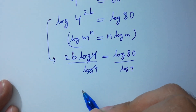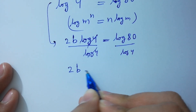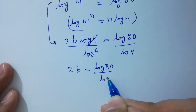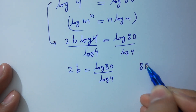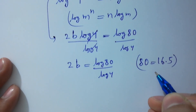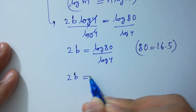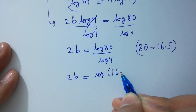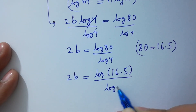Log 4 and log 4 will be cancelled. So 2B equals log 80 over log 4. Since 80 equals 16 times 5, 2B will be equal to log of 16 times 5 over log 4.